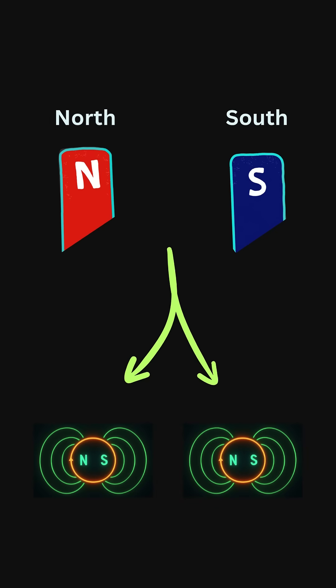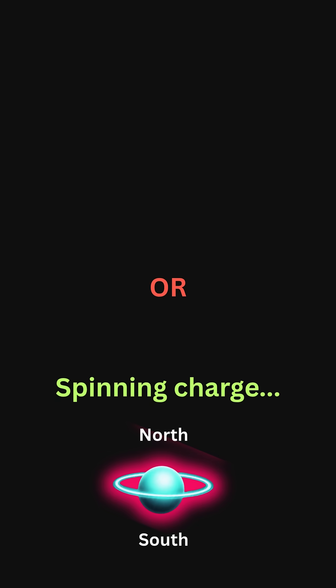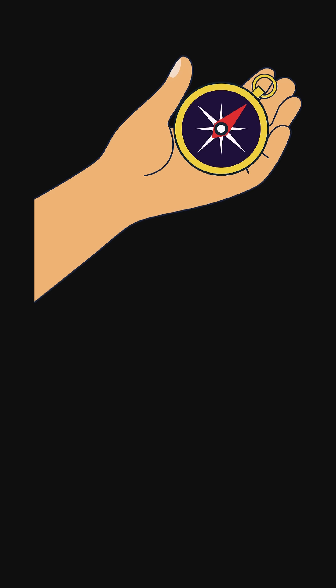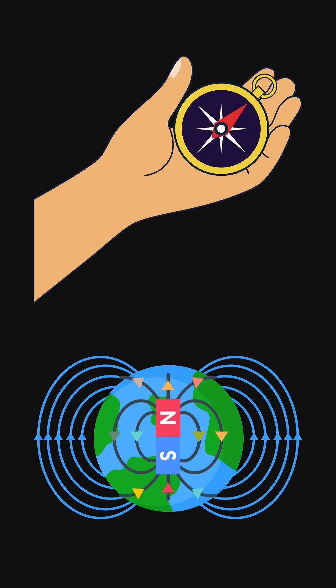At its heart, a magnetic dipole is a tiny loop of current or a spinning charged particle, like an electron. These dipoles are the building blocks of all magnetism, from the compass in your hand to the Earth's massive magnetic shield.